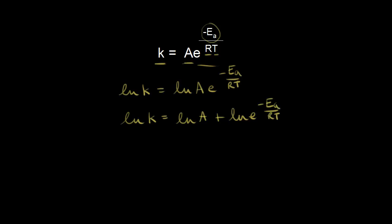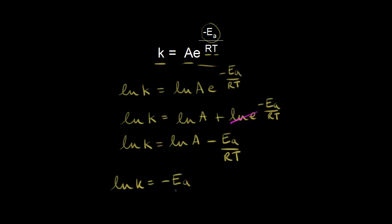The natural log of e to the negative Ea over RT is just equal to negative Ea over RT. So we can write that in: the natural log of the rate constant k is equal to the natural log of A minus Ea over RT. We can rewrite this as the natural log of k equals negative Ea over R times one over T, plus the natural log of A.